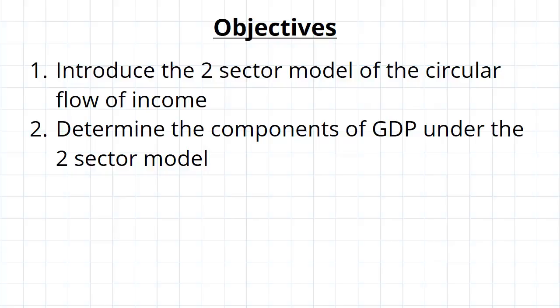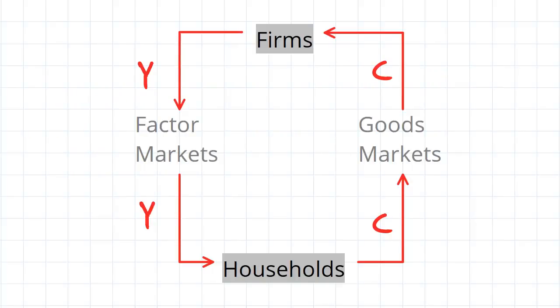At its simplest, the circular flow of income can be represented in this simple two-sector model, which says that you've got firms and households, your two sectors in the economy, and money flows in a circular manner from firms to households by the factor markets and from households to firms by the goods markets.